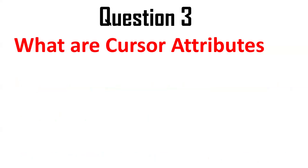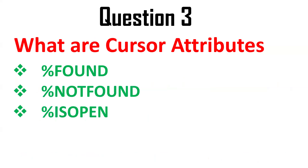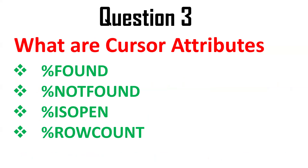The next question is: what are cursor attributes? This is a very important question for interviews. The cursor attributes are: %FOUND, %NOTFOUND, %ISOPEN, and %ROWCOUNT. These can be used as implicit cursor attributes with the SQL prefix (e.g., SQL%FOUND) or as explicit cursor attributes by using the cursor name followed by the attribute (e.g., cursor_name%ISOPEN).